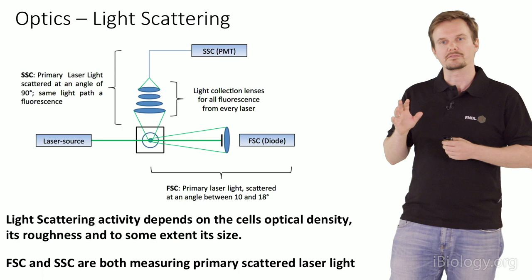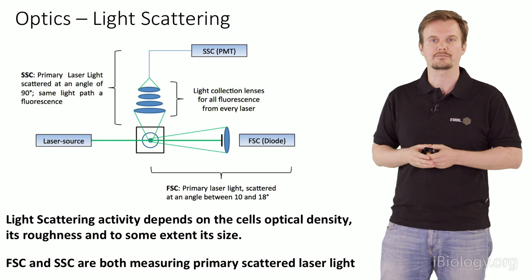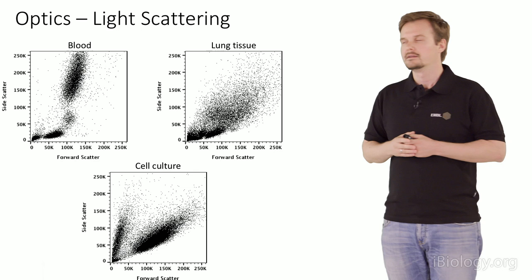One last point before we go into fluorescence: scattering really depends on the primary laser light — we're not measuring any kind of fluorescence here. So these signals are usually very strong, very intense, and easy to pick up.